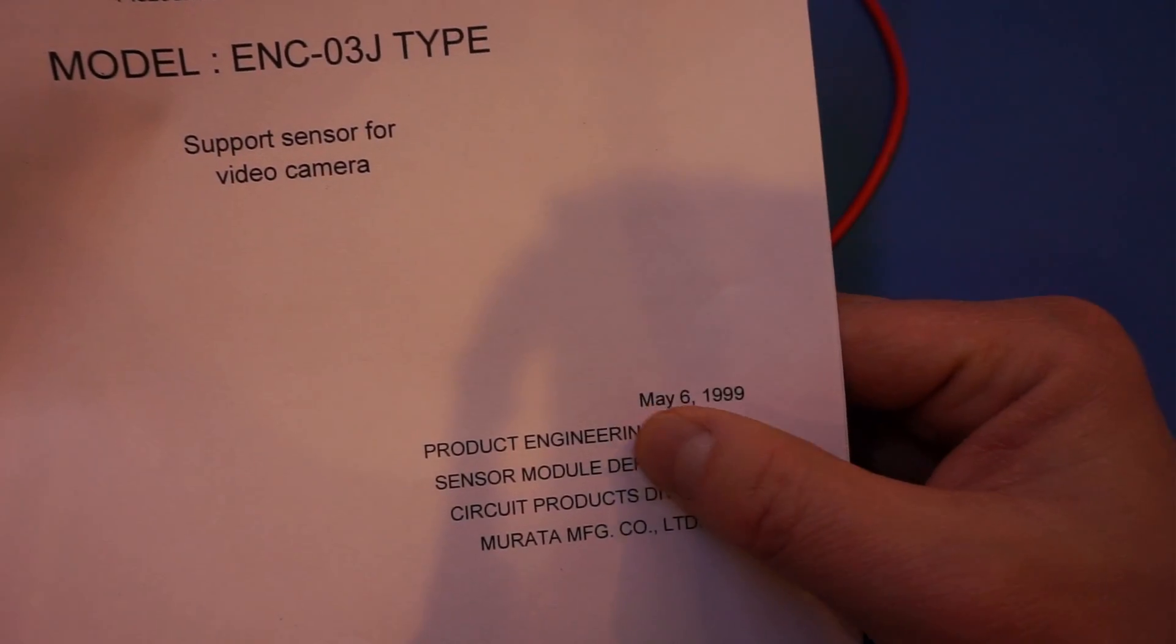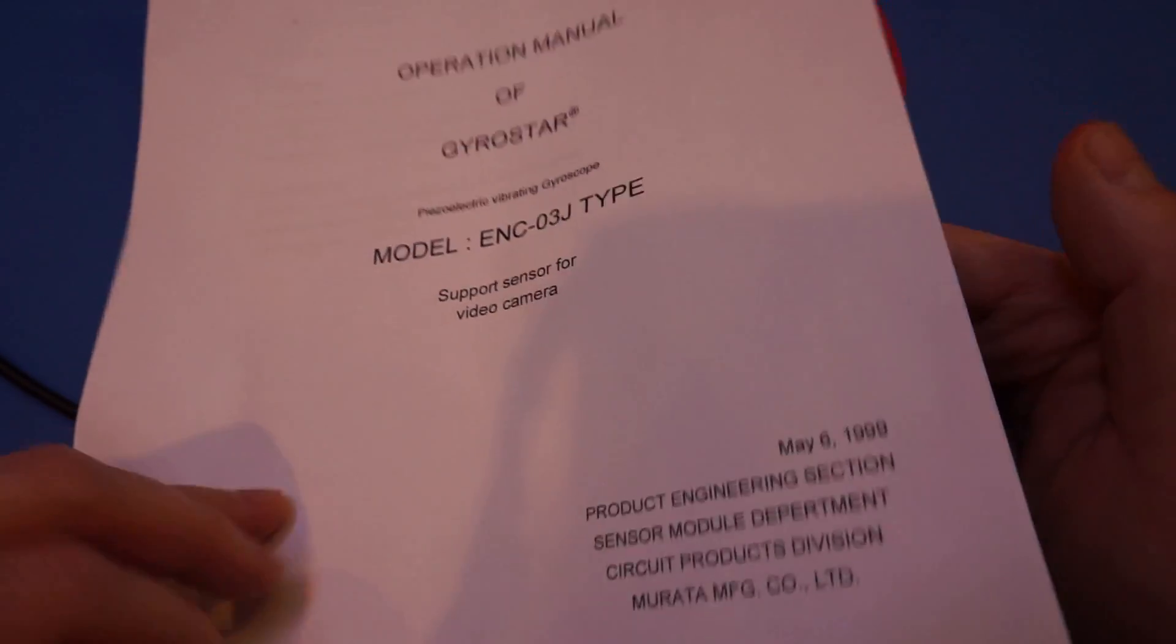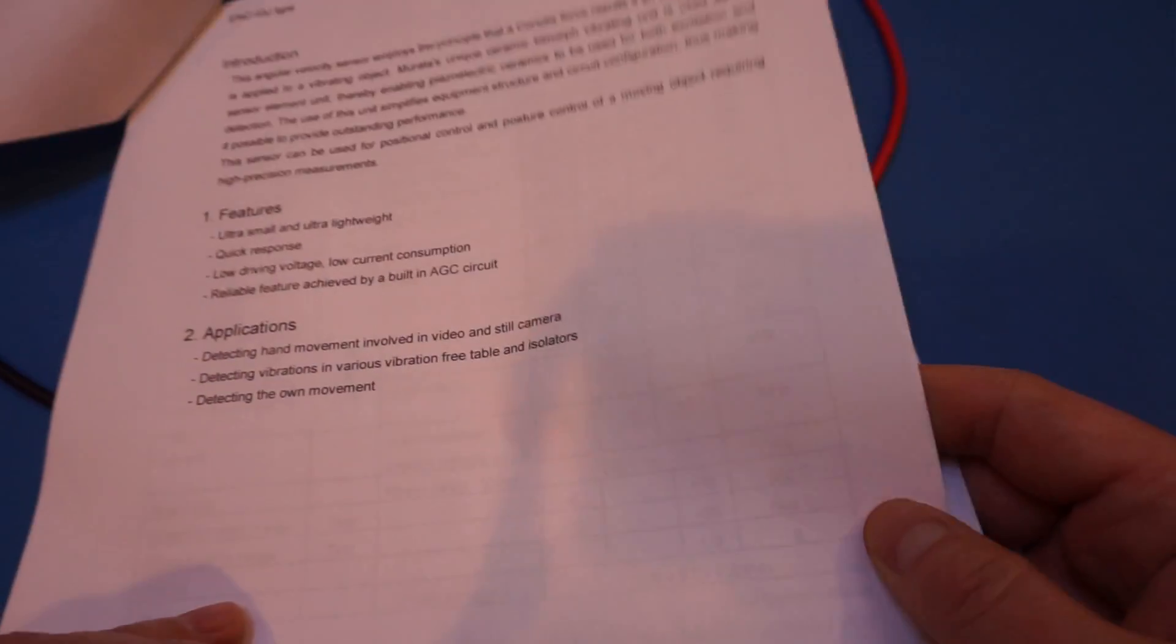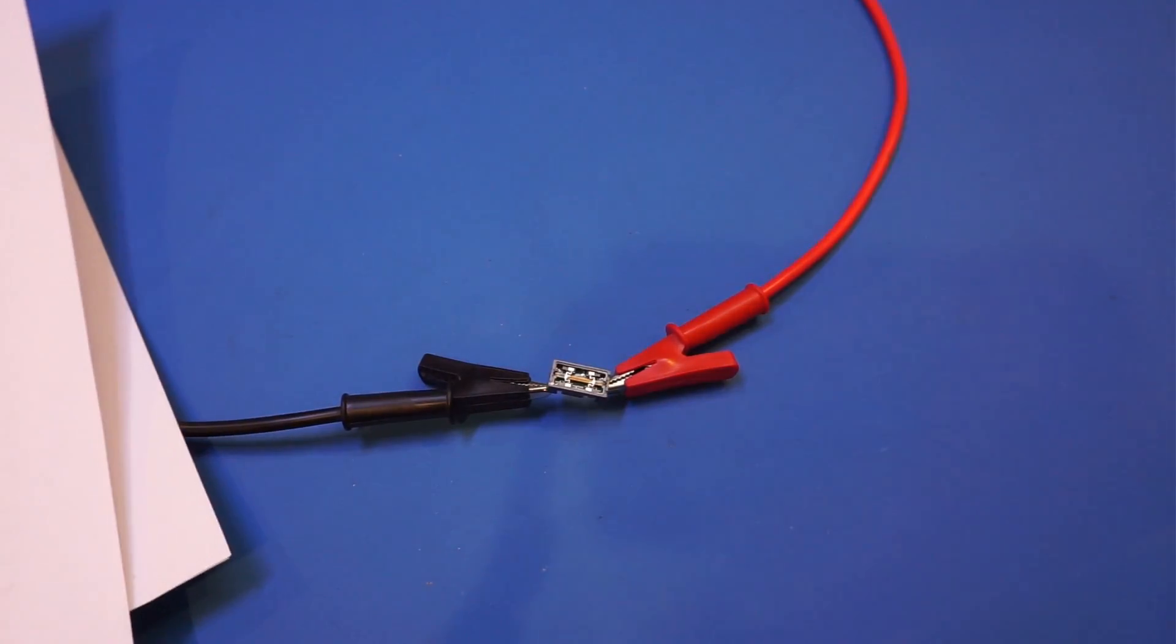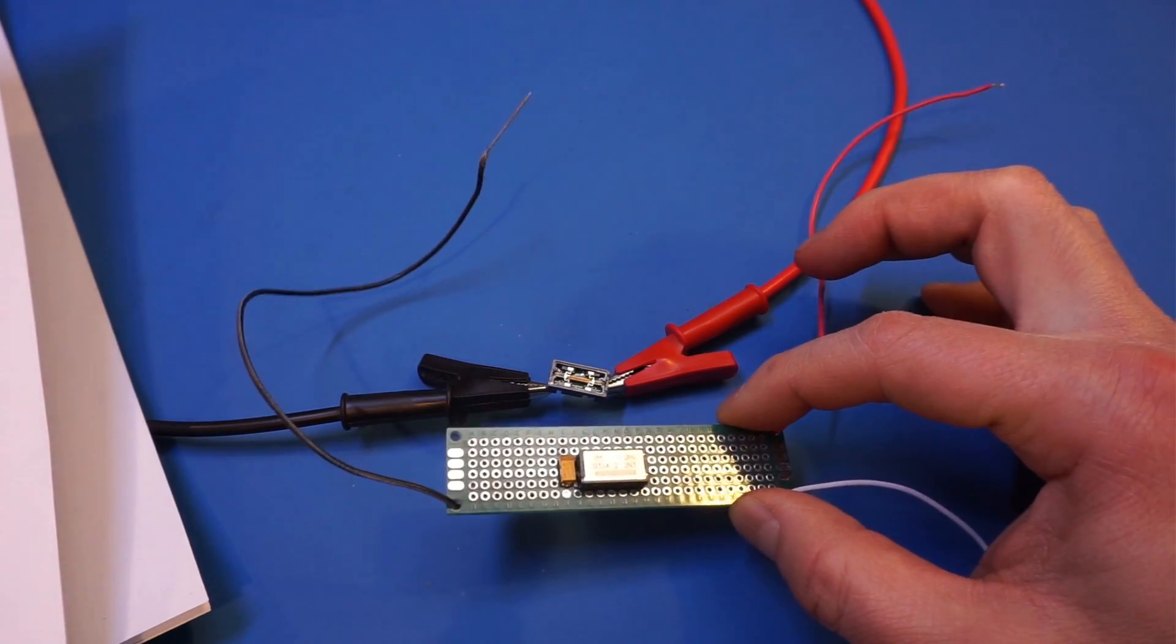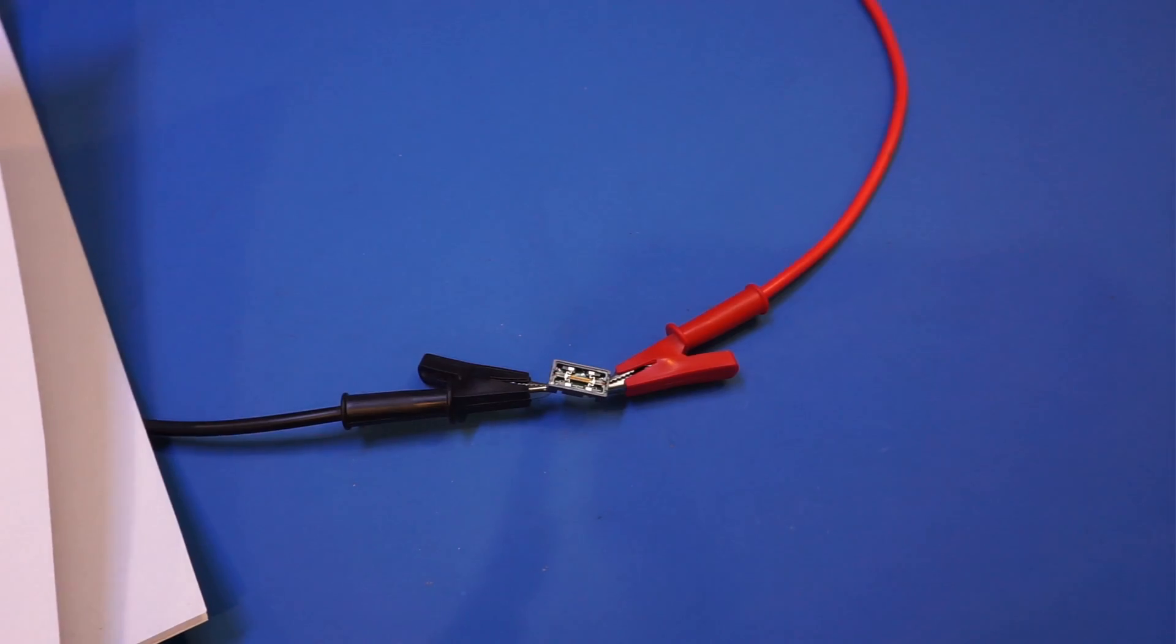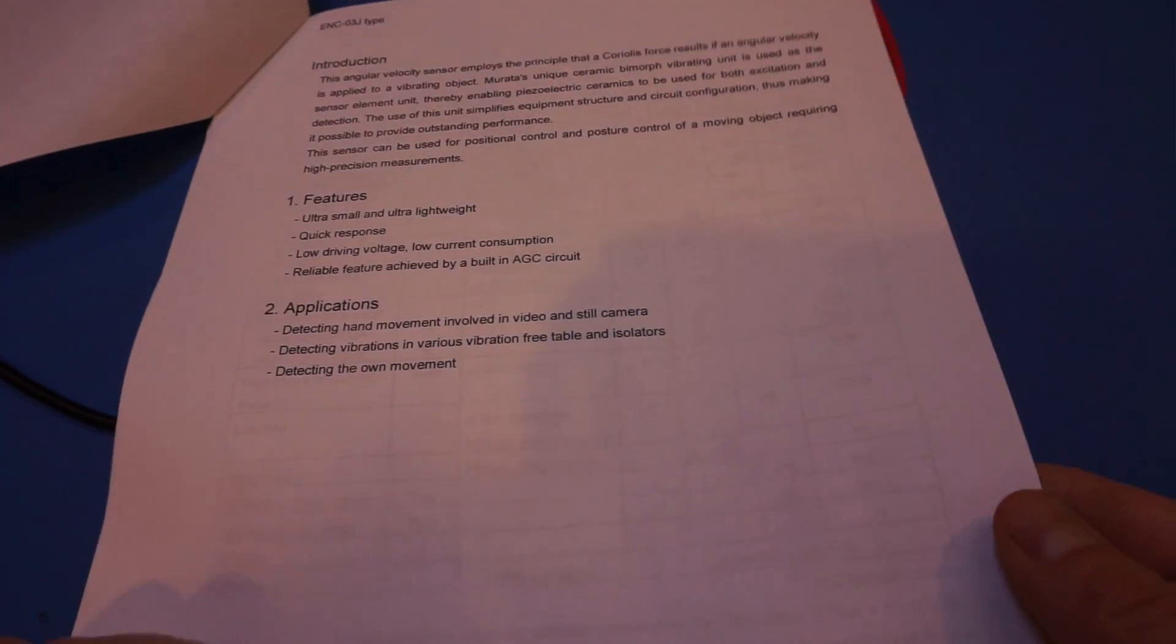And this is the ENC-03J type, and so as you can see from the datasheet that this one was from May 6, 1999, so it has been around for quite some time. But if you look at the datasheet here, you will see that this specific type of sensors usually because it's only operating for one channel, if you have multiple channels, each one would be operating under slightly different frequencies to reduce interference from each other.